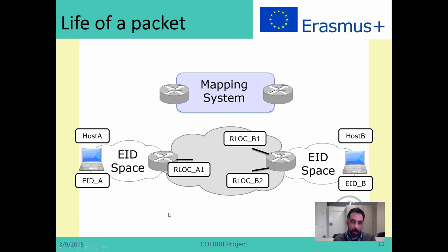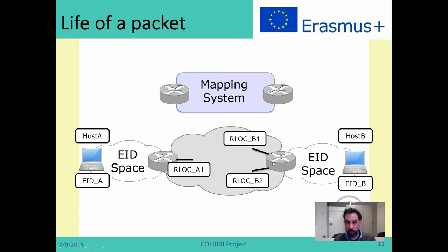I'm going to explain the life of a packet in LISP. We have the EID space with two hosts — host A and host B — both of them having one EID each: EID A and EID B. Then we have two tunnel routers. One has RLOC 1, and the other has two connections to the internet — RLOC B1 and RLOC B2. Now I'm going to explain how a packet goes from host A to host B.